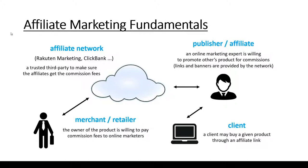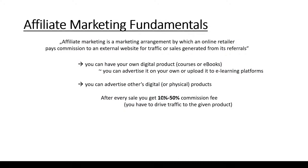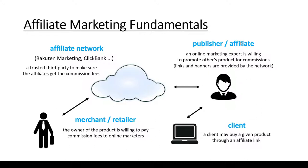Let's talk about the affiliate marketing ecosystem. There are four players: the retailer, the affiliate network, the affiliate itself, and the client. The retailer is the owner of the product who is willing to pay commission fees to online marketers. This is why affiliate networks came to be, such as Rakuten Marketing, Clickbank, or JVZoo. These are affiliate networks — a trusted third party that makes sure affiliates get their commission fees.